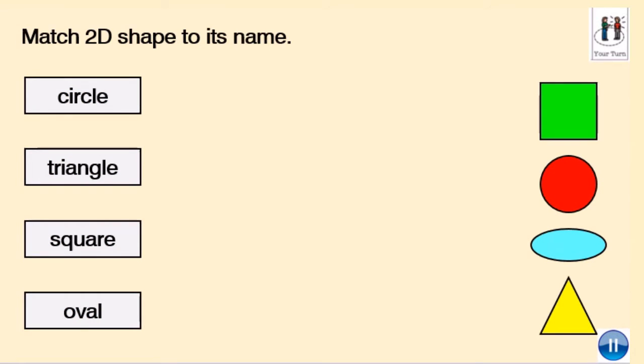We're going to match the 2D shapes to its name. Circle, and I'm going to look, and I'm going to match it to the circle. What you could do is write down the word and then draw the 2D shape. Pause the video and do the rest for triangle, square and oval. Remember, you've got the properties on the previous part of the video that you can use.